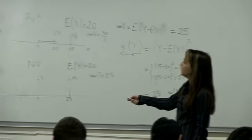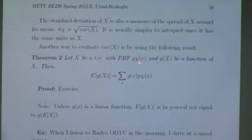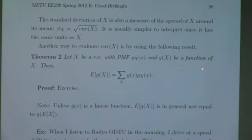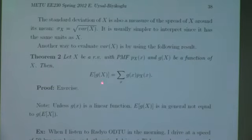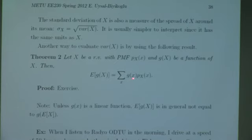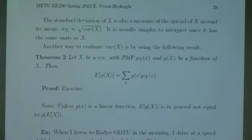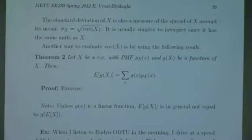Another way to evaluate variance uses the following result: let x be a random variable with PMF p_x(x) and g(x) a function of x. Then the expected value of g(x) can be found by summing over all values that x can take: g(x) times p_x(x). It's intuitive, and you can prove this as an exercise — a short proof is found in the textbook.